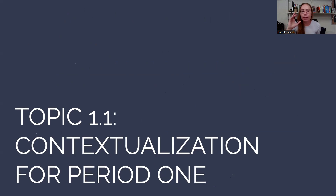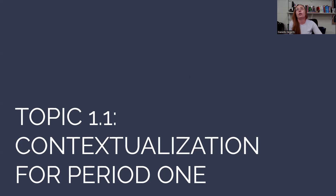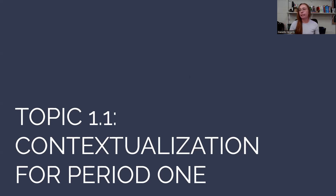So for topic 1.1, this is contextualization for period 1. Contextualization is like this really big, blocky word, but it's actually something really simple. Contextualization, or context, is just providing some background information. For every period that we cover in this class, one through nine, every point one — so 1.1, 2.1, 3.1, et cetera — every point one in this class is going to be contextualization. It's the book and the framework providing you with some background information to give you an idea of what the unit is going to be like.